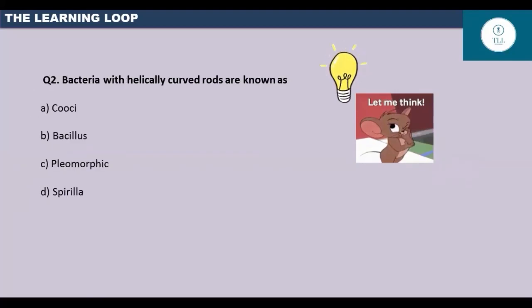The second question is, bacteria with helically curved rods are known as: Option A, cocci. Option B, bacillus. Option C, pleomorphic. Option D, spirilla.